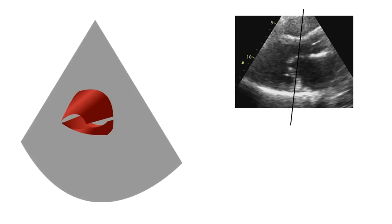Another way to estimate mitral valve area is pressure half-time. Going back to the mitral valve continuous wave Doppler trace used to estimate pressure gradients, bring up the measurements pane and go to Mitral Valve → Mitral Valve Pressure Half-Time.